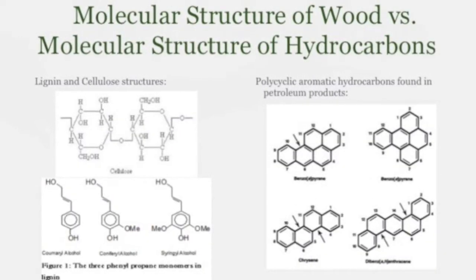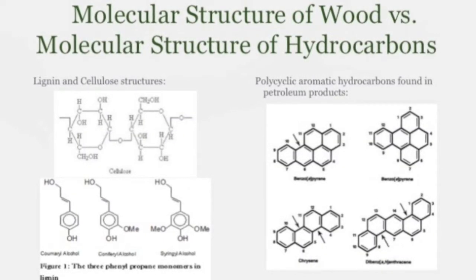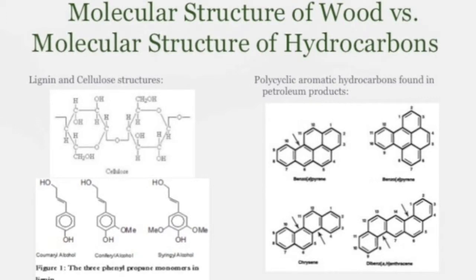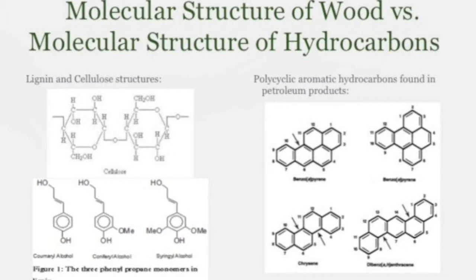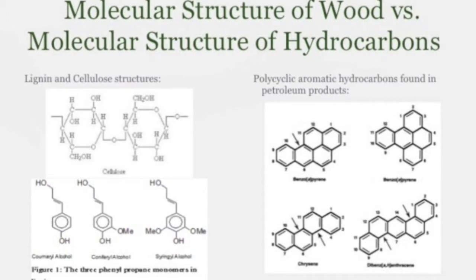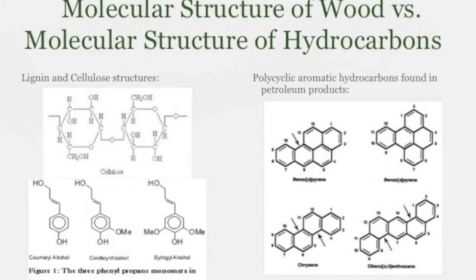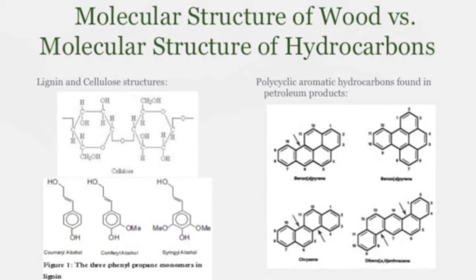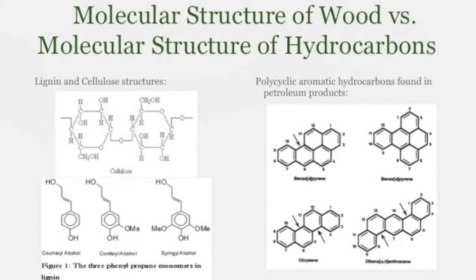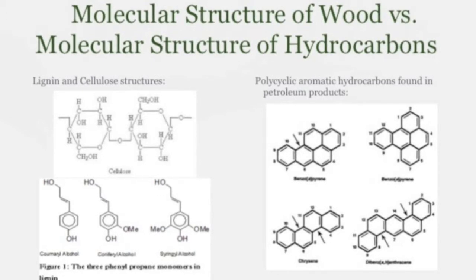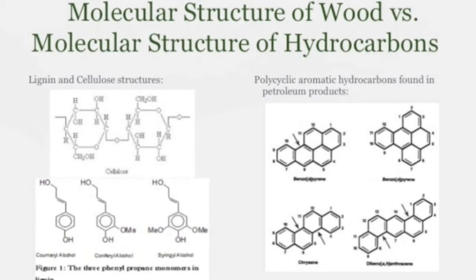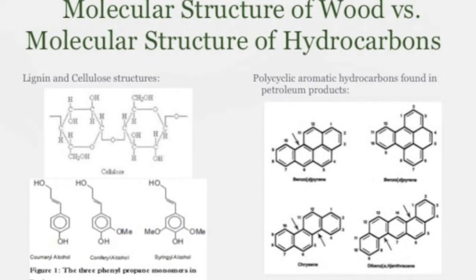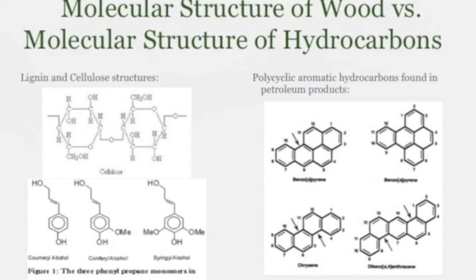On this slide, you can see the molecular structure of wood versus the molecular structure of hydrocarbons. On the left is a wood structure — the top is cellulose and the bottom is lignin. On the right is the molecular structure of hydrocarbons found in petroleum products. As you can see, these structures are very similar.